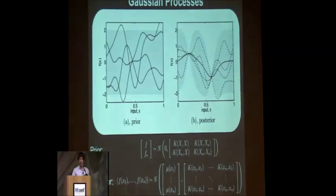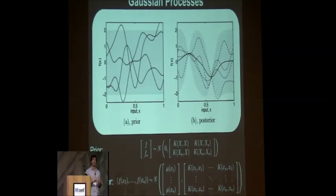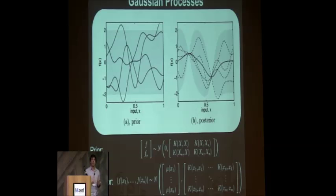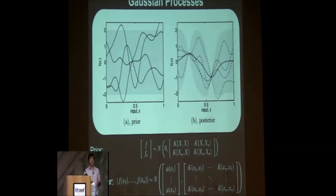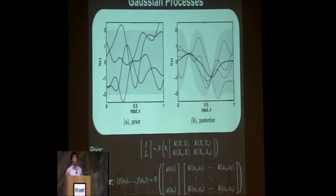The other way to think of Gaussian processes is from the functional perspective. At the beginning you have a bag of functions — any of these could represent the underlying thing we care about, like click-through rate with respect to all our thresholds. As we sample points, some functions make less and less sense. If we're sampling with no noise, any function that doesn't pass through a point we've observed can be thrown out. As we discard these functions, others become more probable — the function that passes through all our points in a smooth way is the most likely function, and that's the mean of our Gaussian process.